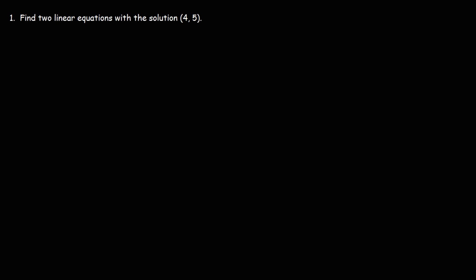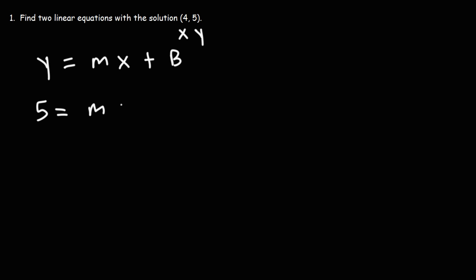Let's start with the slope-intercept form of the linear equation: y is equal to mx plus b. x is 4 and y is 5, so we're going to replace y with 5 and x with 4.